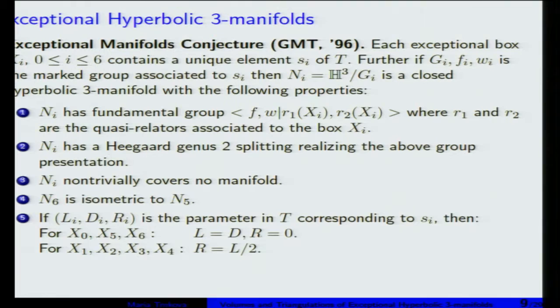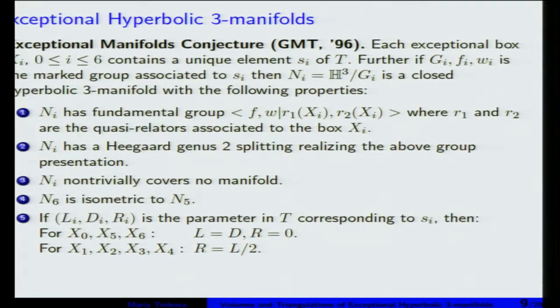When we say properties of an exceptional manifold, it means the short geodesic has no thick tube radius. But this conjecture doesn't say that we have found all exceptional manifolds — those that were discovered are exceptional, but it doesn't say they're all of them. The part of the conjecture which says they don't non-trivially cover any other manifold suggested that no other exceptional manifolds can appear.